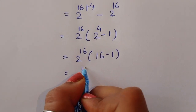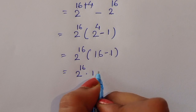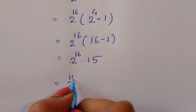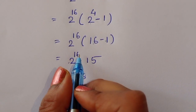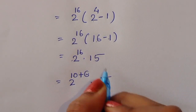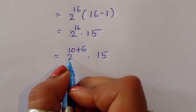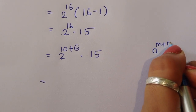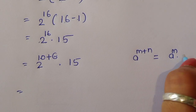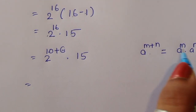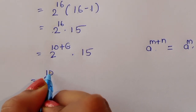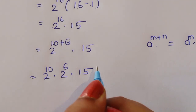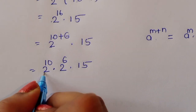So it is equal to 2 power 16 times 2 power 4, that is 16, minus 1, which equals 15. Now 2 power 16 we can write as 2 power 10 plus 6. Using the formula a power m plus n equals a power m times a power n, we get 2 power 10 times 2 power 6 times 15.